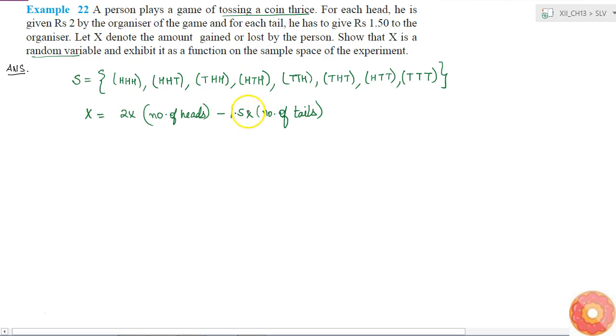So, if this comes out as negative, it means that is the amount lost by the person. Now, what do we have to do? We have to show that X is a random variable. How can we show it? Let us find whether a value of X exists for all the elements in the sample space or not. So, for the first element, X will be all three are heads. So, it will be 2 times number of heads is 3 minus 1.5 times number of tails is 0. This is equal to Rs. 6.